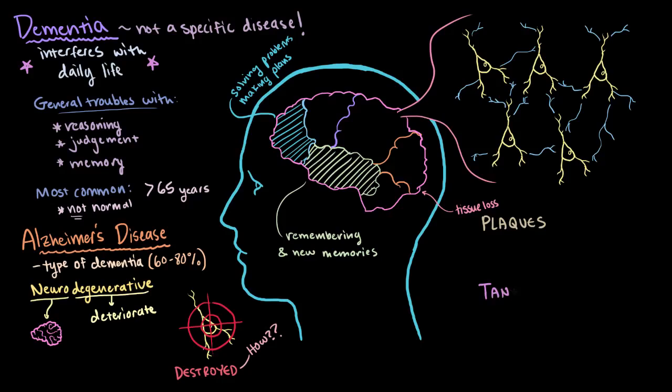And these are called plaques and tangles. Plaques are like these weird abnormal clusters of protein fragments that build up between neighboring neurons. So this is a normal group of nerve cells going about their business, you know, communicating and whatnot. With Alzheimer's disease, these plaques start to form in between these neurons, which is thought to make it a lot harder for them to communicate.